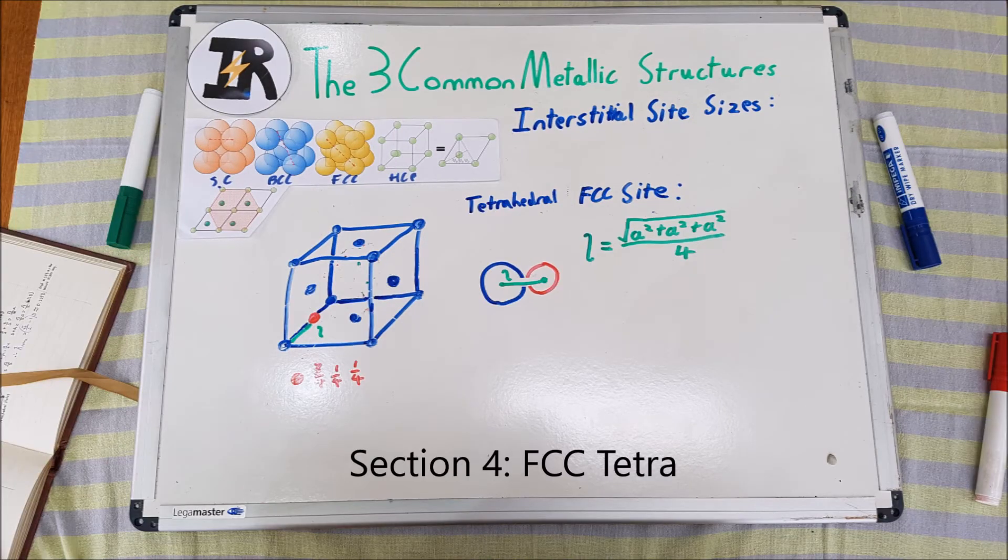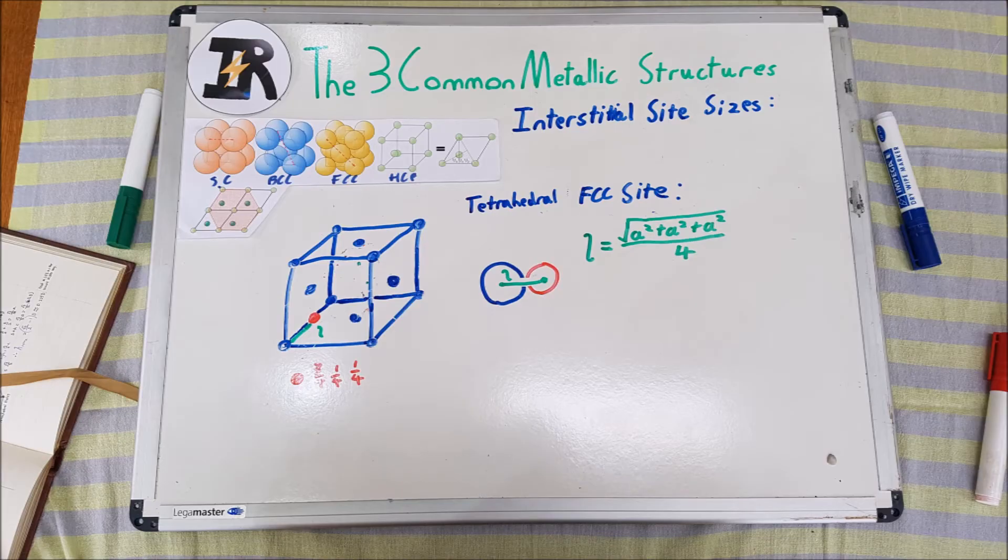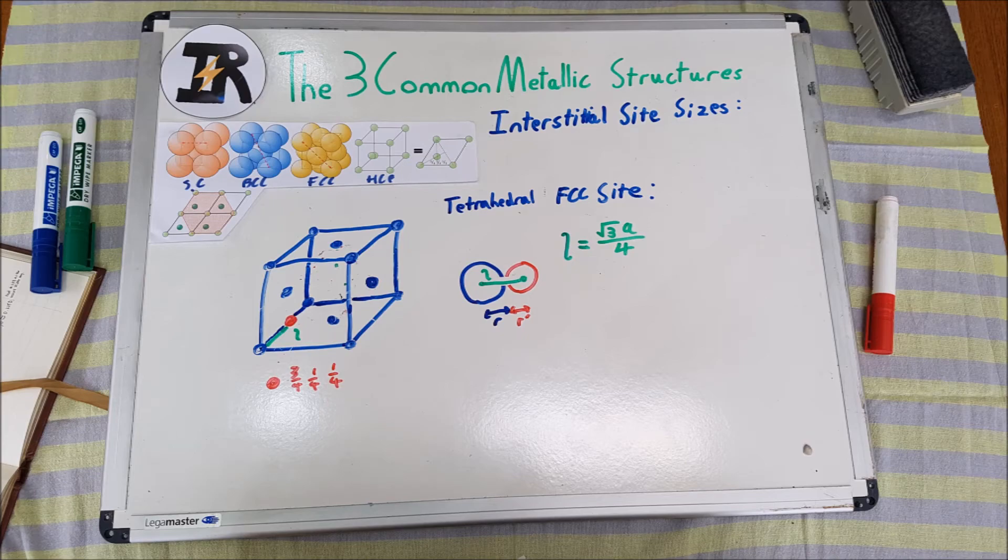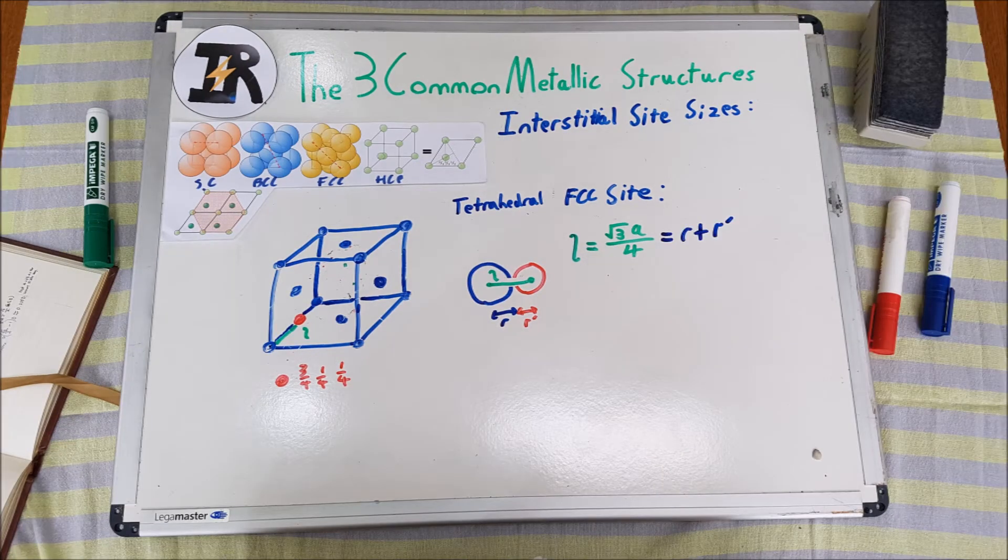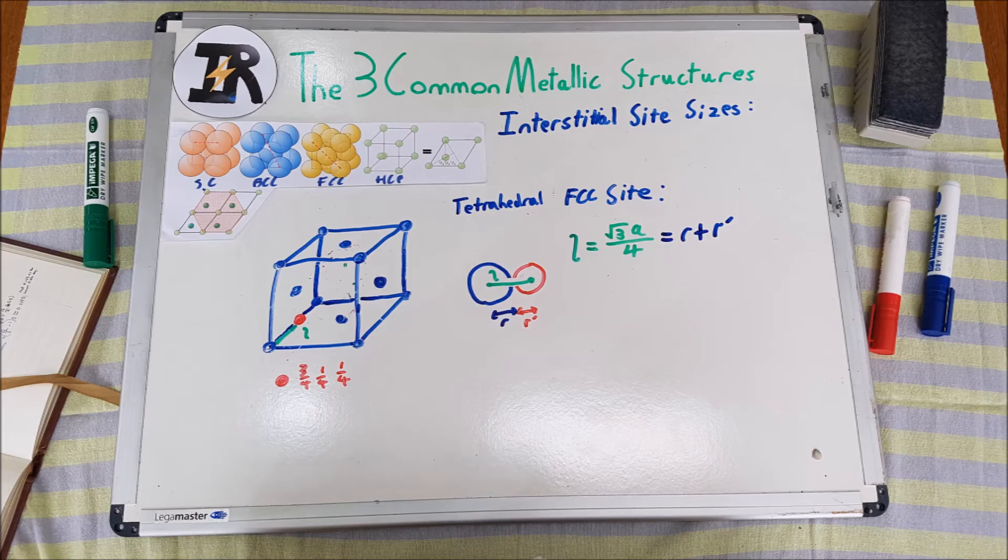For the tetrahedral hole, the distance between the center of a corner atom of the FCC matrix to the center of a nearby tetrahedral hole, which in this diagram is positioned at (3/4, 1/4, 1/4), this distance of L is equal to one-quarter of the distance between the opposite FCC corner atoms, i.e., (√3/4)A. And L is also equal to R + R', as it's connecting the centers between the two atoms and they make contact with one another.